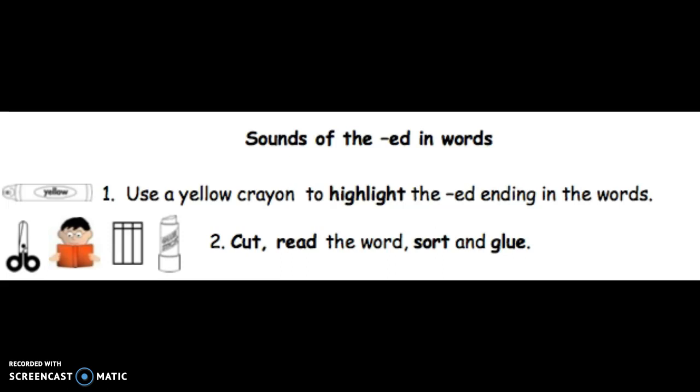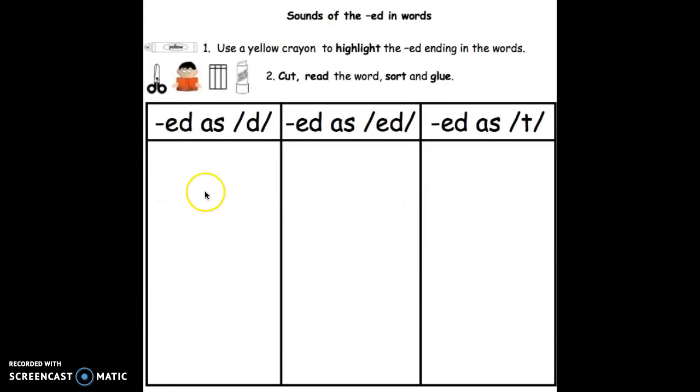The suffix ed can make three sounds. Today you're going to practice sorting some words into three groups. Words that have ed as /d/, so it sounds like /d/ at the end of the word. Words that have ed as /ed/ will go here. Words that have ed as /t/ will go here.